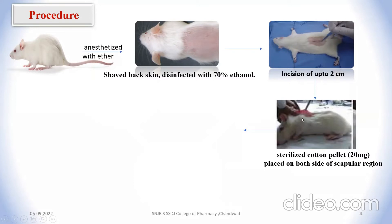In this region, insert a sterilized cotton pellet weighing up to 20 mg, and then suture the incision.